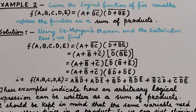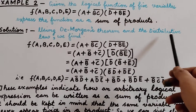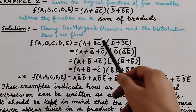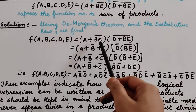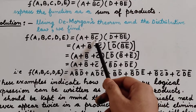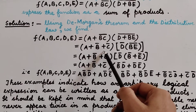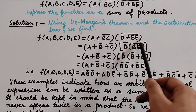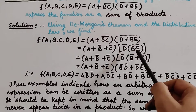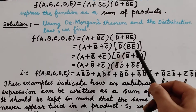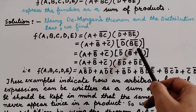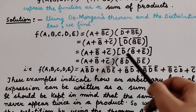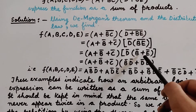Using De Morgan's theorem and the distributive law, we apply De Morgan's first theorem to BC complement, writing it as B complement + C complement. Then applying De Morgan's second theorem, (D + BE) whole complement becomes D complement multiplied by B complement. Again, BE whole complement from De Morgan's first theorem is written as B complement + E complement. After this, we apply the distributive law.